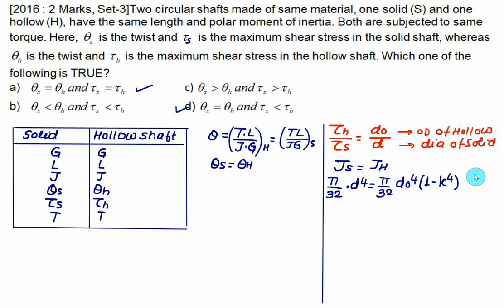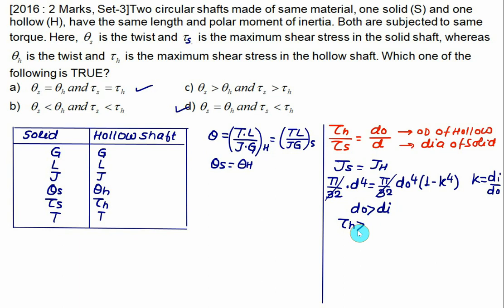Since (1 − k⁴) is a fraction less than 1, for J to be equal, d_o must be greater than d. This means τ_h > τ_s. Therefore the shear stress in the hollow shaft is greater than in the solid shaft. Choice D is correct: the shear stress developed in the solid shaft is less than in the hollow shaft.